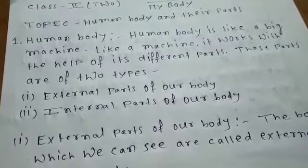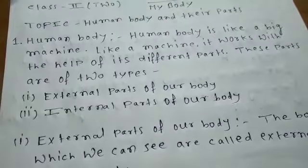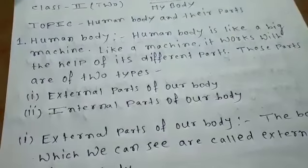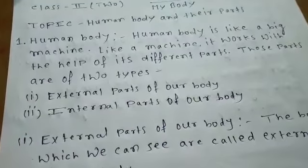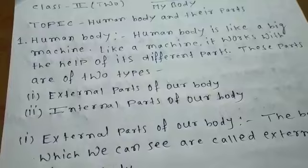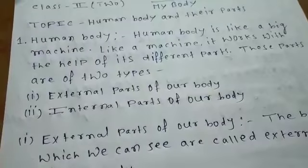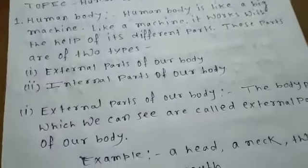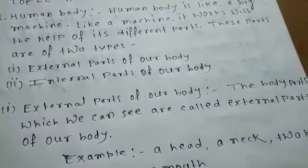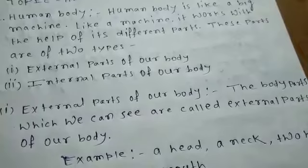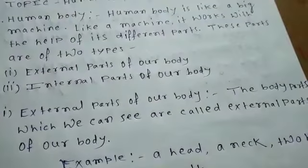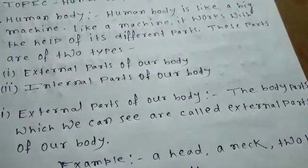Our body has two parts: external parts of our body and internal parts of our body. The body parts which we can see are called external parts of our body.